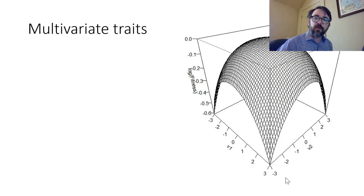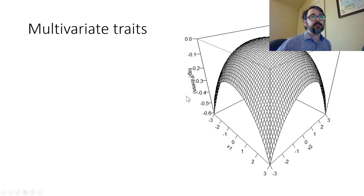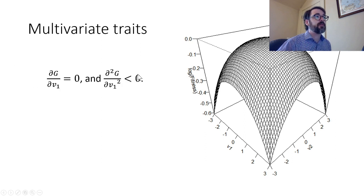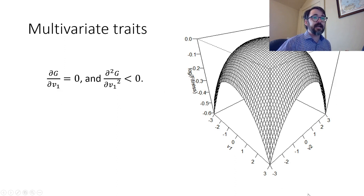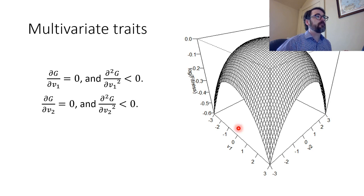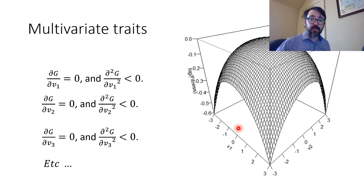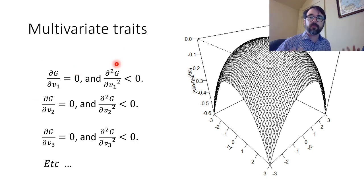People always want to know: what if you have more than one trait? We can do that too. I can only draw you a picture if we have two traits, because now we have two different trait axes and fitness on the z-axis. In this case, you just need to have the partial derivatives — the first and second partial derivative with respect to each trait have to satisfy the ESS maximum principle. You can do a double, triple, or as many different optimizations as you want using partial derivatives.